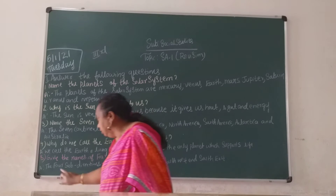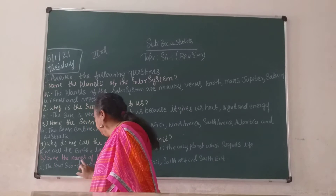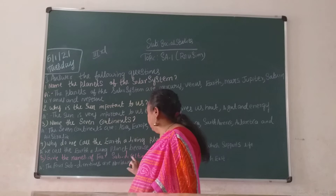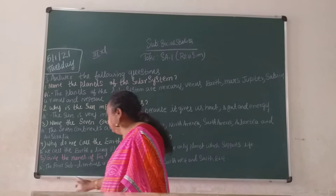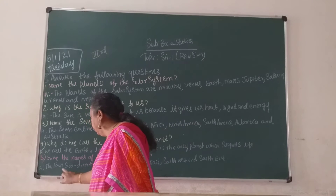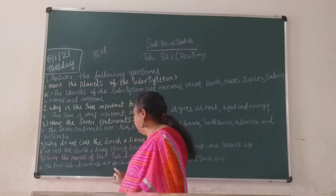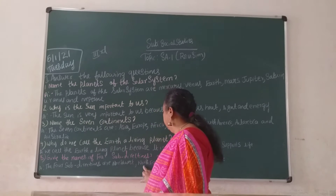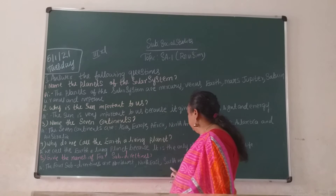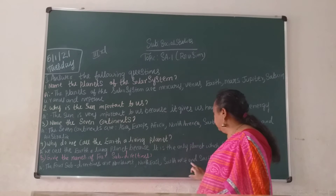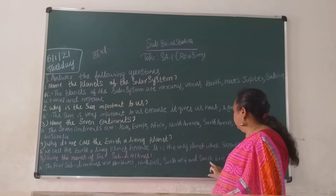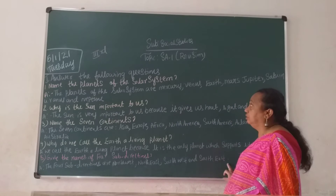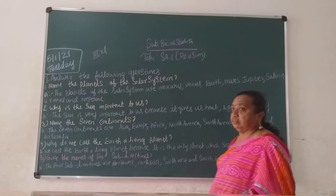Give the names of the four subdivisions. The four subdivisions are Northwest, Northeast, Southwest and Southeast.